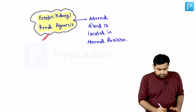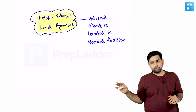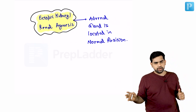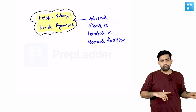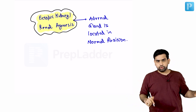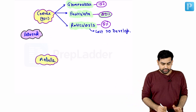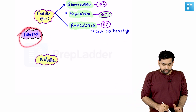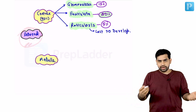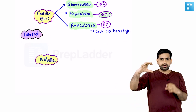If there is an ectopic kidney or renal agenesis, the adrenal glands will remain at their normal position — nothing is going to happen to them.